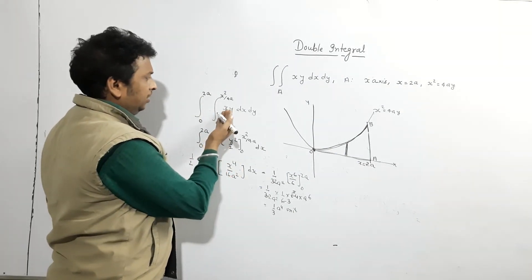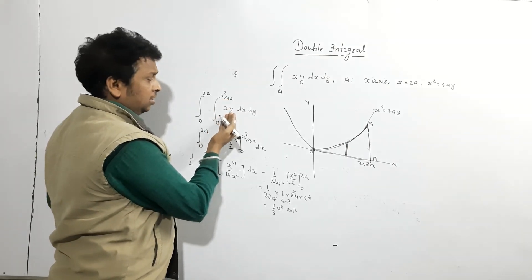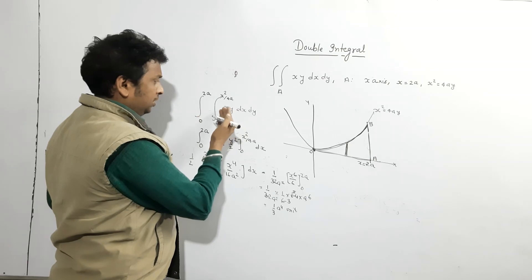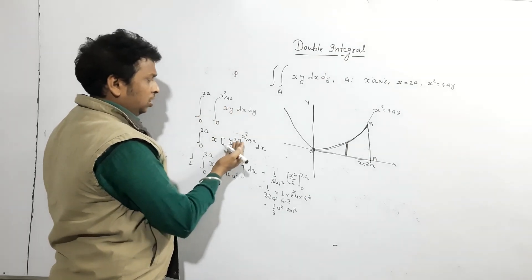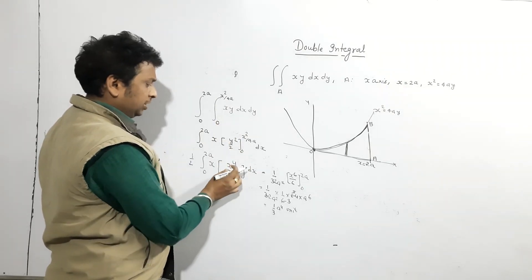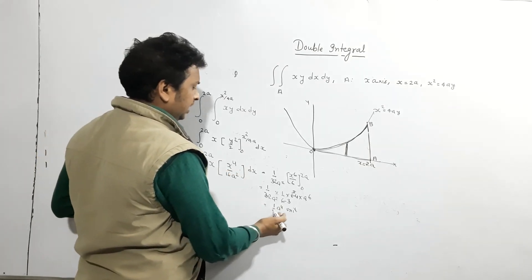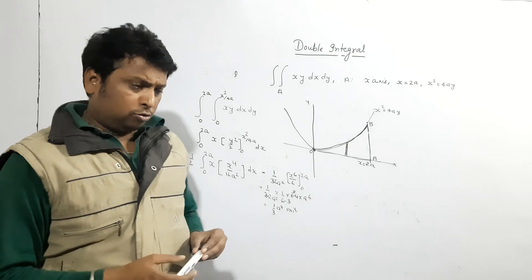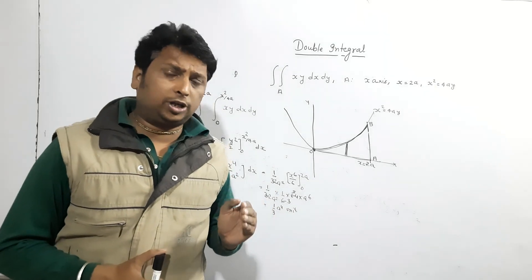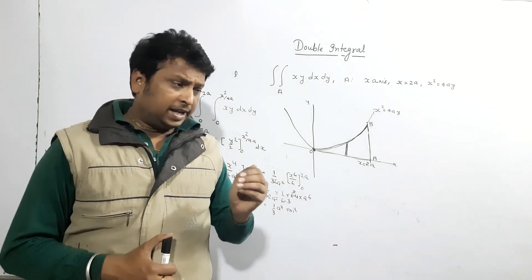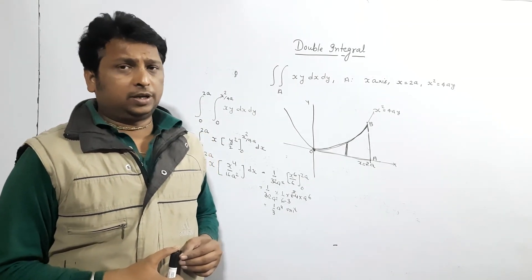Since the x limits are given, we integrate with respect to y first. Keeping x as a constant, y integration gives y²/2 evaluated from 0 to x²/4a. Then integrating with respect to x from 0 to 2a gives the final answer of a⁴/3. This covers the basics of double integrals. In the next lecture we move towards change of order of integration, which is very important. Thank you.